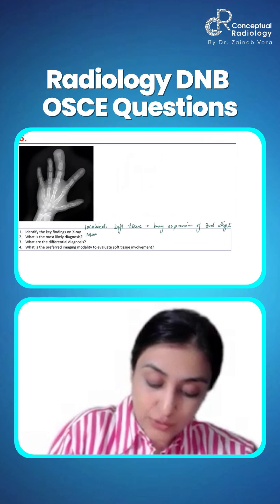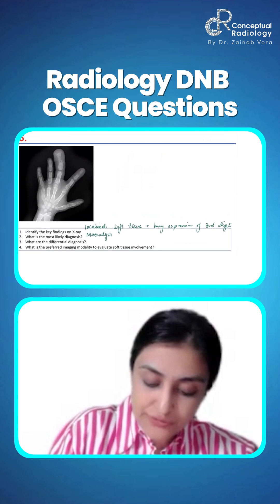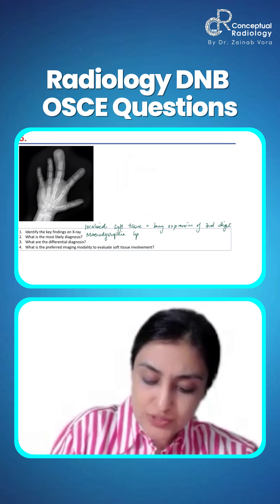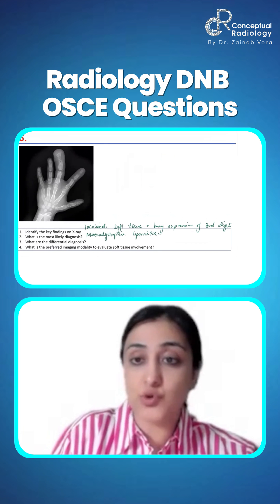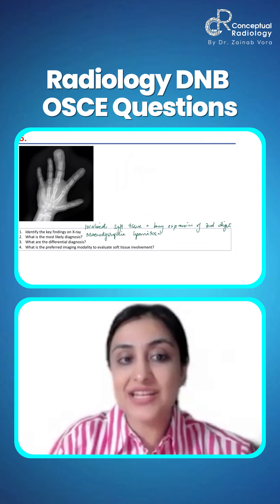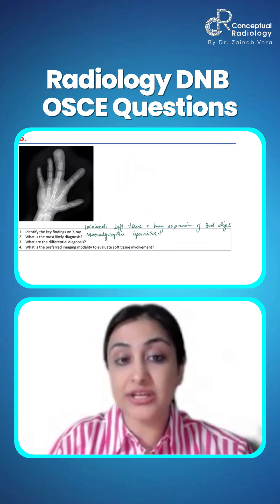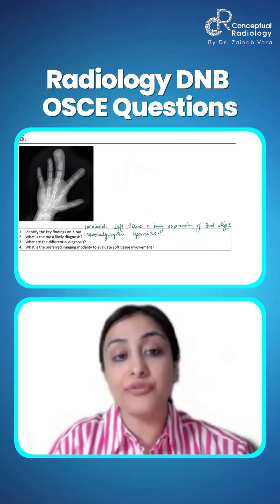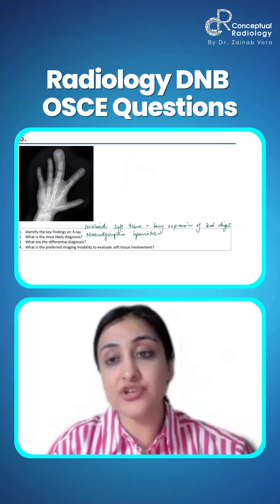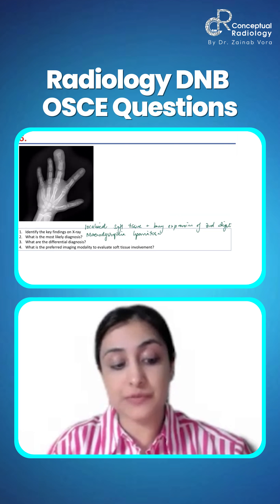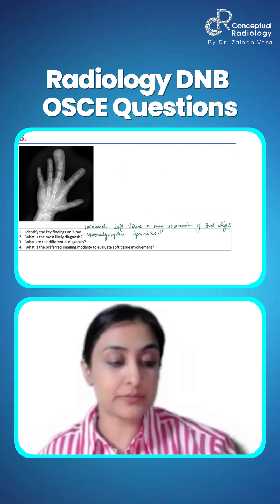It is macrodystrophia lipomatosa. This is an overgrowth syndrome where there is soft tissue thickening of one particular digit. What are the differential diagnoses? What do you think?